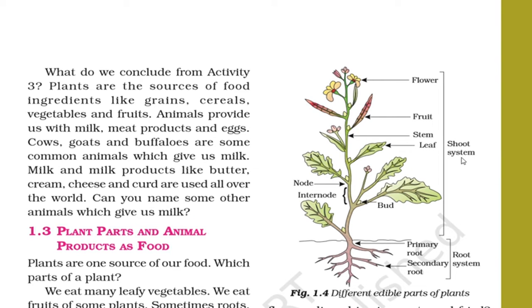The part of the plant which is above the soil is called the shoot system. Here you can see the node — node is that area of a plant from which leaves and branches grow. The gap between two nodes is called internode. A bud is a small pointed structure that appears on a tree or plant and develops into a leaf or flower. You can also see the leaf, stem, fruit, and flowers of the plant.